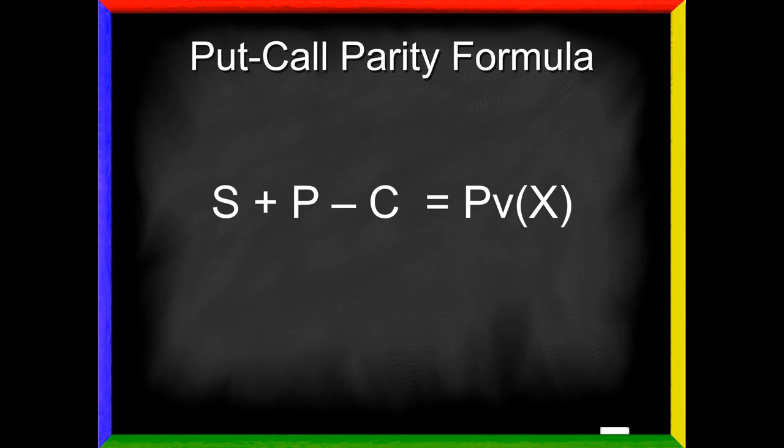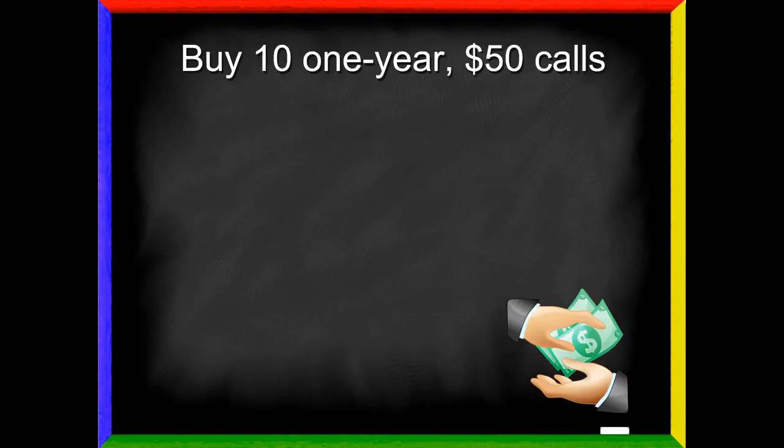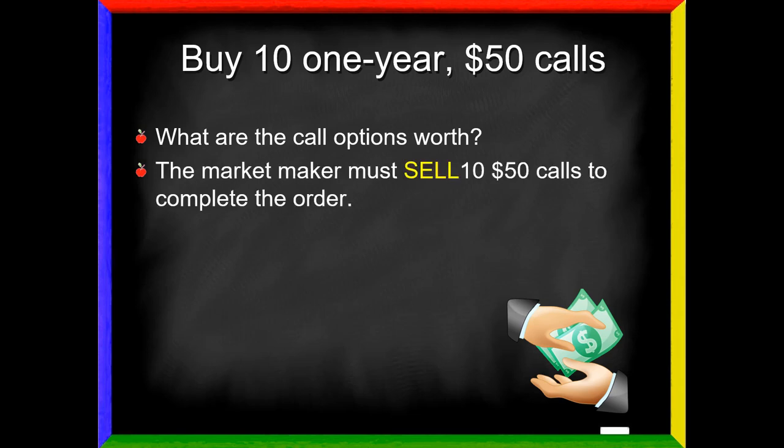The best way to intuitively understand it is to look at a transaction. Let's assume you wish to buy 10 one-year $50 calls. It doesn't really matter what the expiration is, but I'm going to use one year to make the math easier. The question we're trying to solve is what are these call options worth? The market maker must sell 10 of these $50 calls to complete the order. You're buying 10, he has to take the sell side. He has no choice.